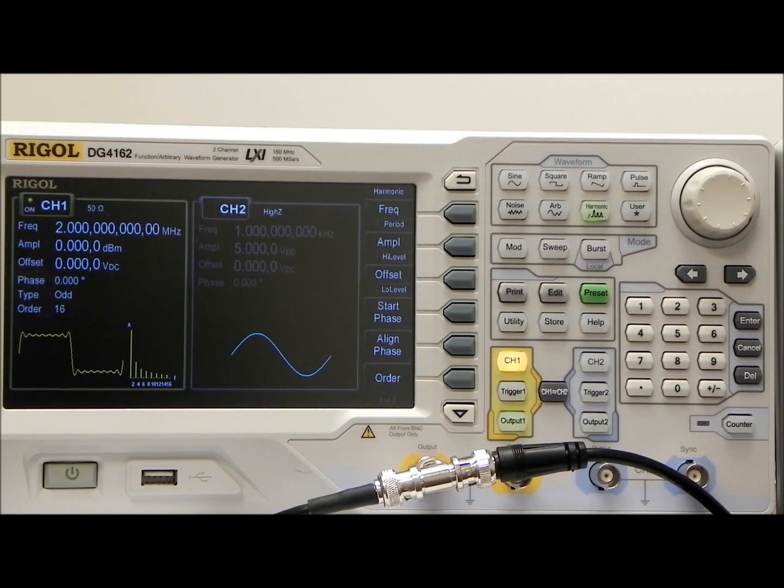The particular feature we're looking at is a harmonic maker. With the harmonic function, you have an opportunity to program as many as 16 harmonics and give each one of them an amplitude and a phase.